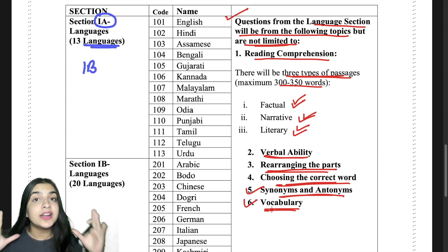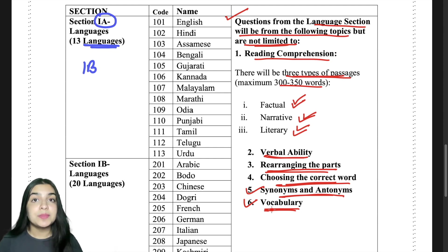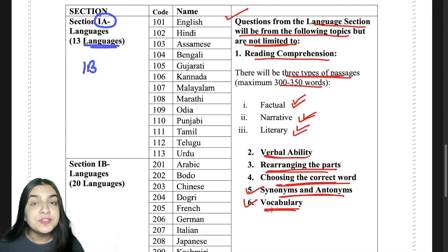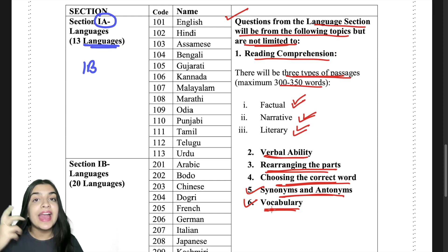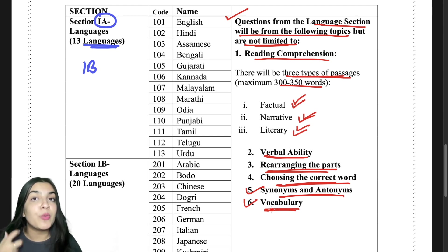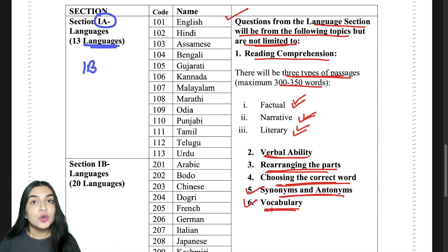To improve vocabulary, first of all start reading a daily newspaper. I would recommend either the Indian Express or The Hindu. Adopting strong reading habits will be very useful for your language test. Since the language test is compulsory for every student going to Delhi University, there is no replacement for it.